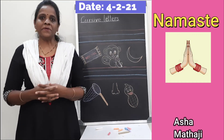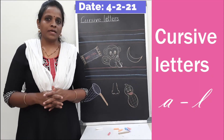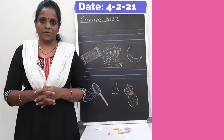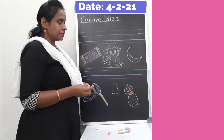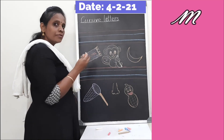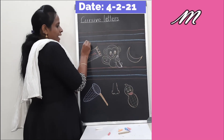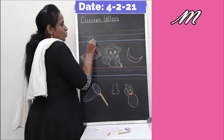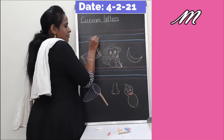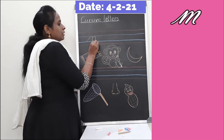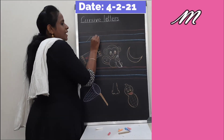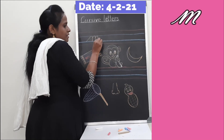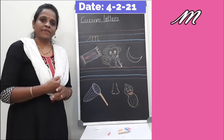Namaste, welcome to today's session. Till now you have learnt cursive letters A to N. Today you are going to learn 2 more new cursive letters. The first letter is cursive M. From the second blue line, go up with a sliding line, come down, touch the second blue line, go up, touch the first blue line, take a curve, come down, touch the second blue line.